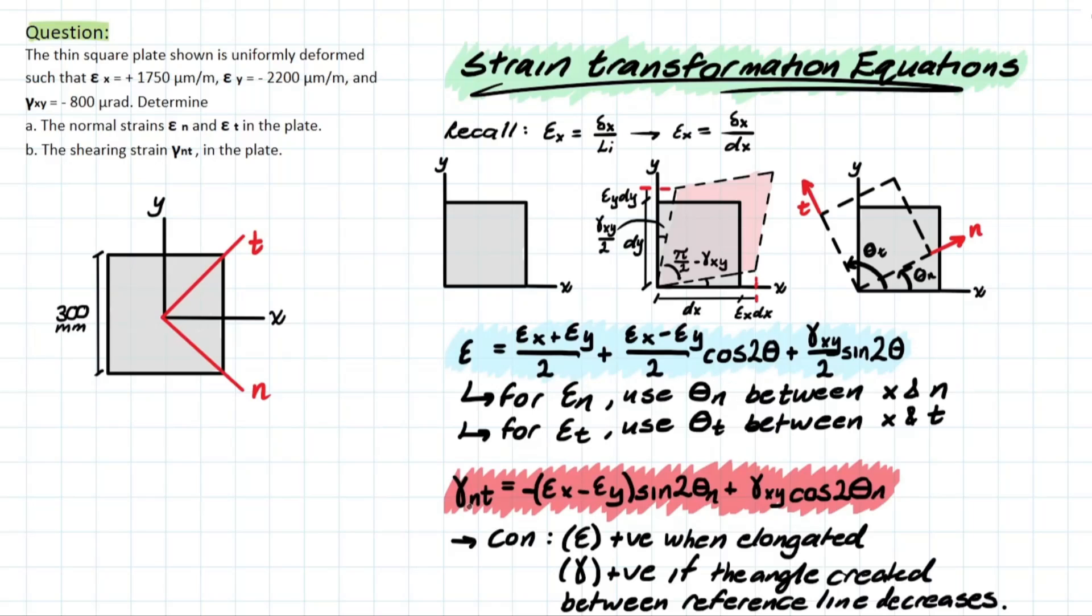And for the shearing strain nt, simply meaning the change in size with respect to the nt plane, we're going to be using angle theta n. So that's just the angle with respect to x and n created between based on the orientation. And we have the conventions that we derived from our previous video, where we know that an elongation for normal strain will produce a positive value. And a shearing strain will be positive if the angle created between the reference lines decreases.